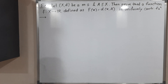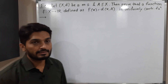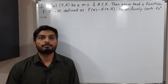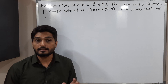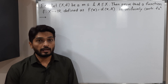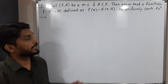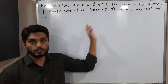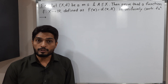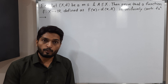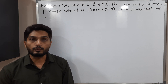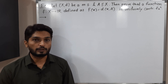Hi everyone. In this video we are going to discuss this example. We have a metric space X,d; A is a subset of X. A function f is defined from X to ℝ as f(x) = d(x,A), the distance of x from set A. We have to prove that it is a uniformly continuous function.